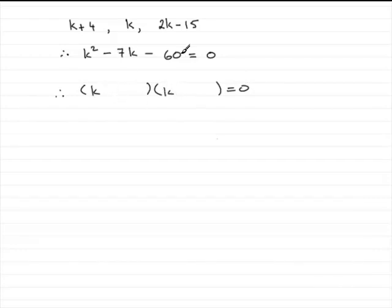And if you find two numbers that multiply together to give minus 60, that's going to be a minus 12 and a plus 5 here. And when you multiply this out, you're going to find you get the minus 7k in the middle.